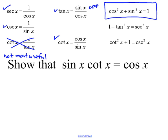Tangent is opposite over adjacent, which is like sine of x over cosine of x. So if you get stuck, you can remember that tangent is opposite over adjacent. This new one is super important. If you know this one, you can get the next one by dividing by cosine of x, and you can get another one by dividing everything by sine of x and using your other identities.